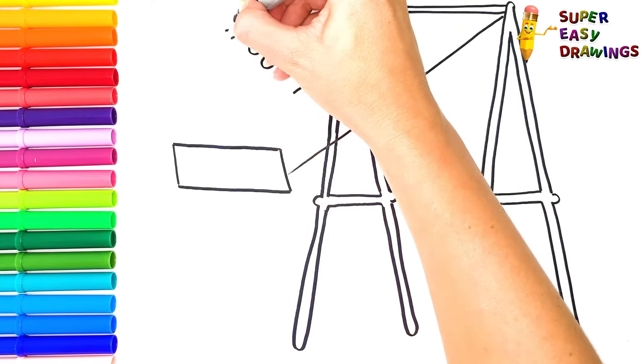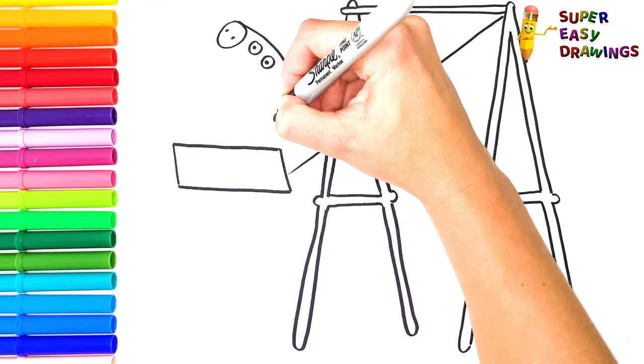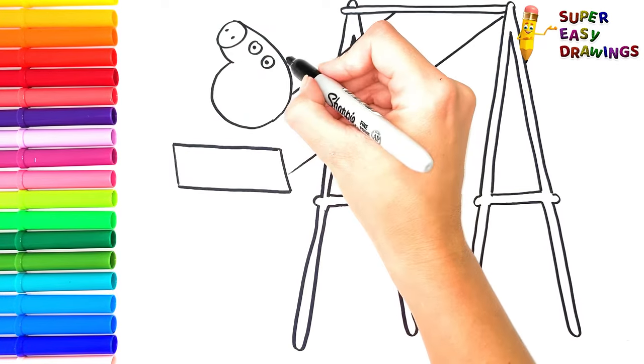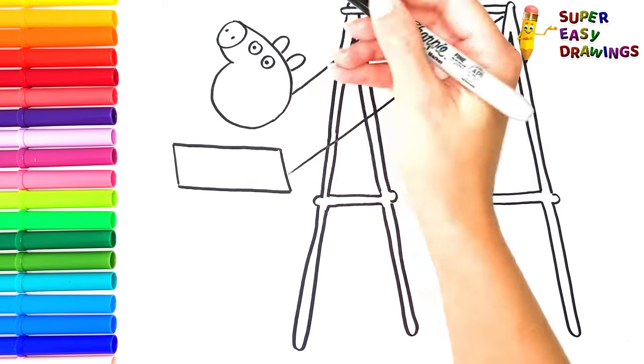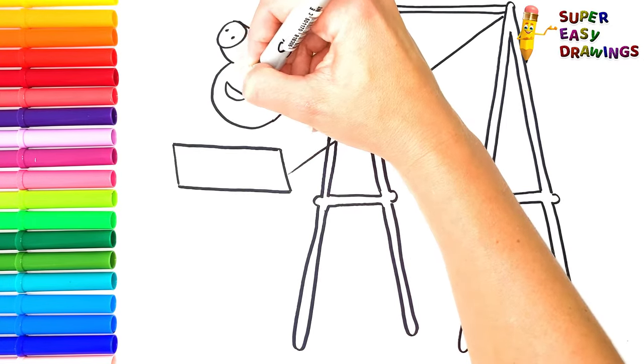At first I draw her eyes. Then her nose. And the shape of her head. I draw her ears. A circle for her cheek. And a wide open smiling mouth.